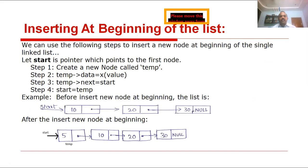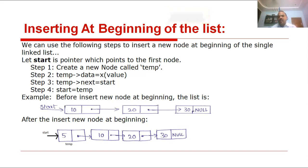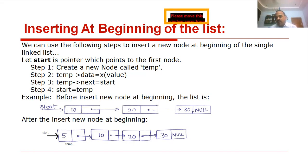All the operations available in the single linked list are also available in the circular single linked list. All the operations mean inserting, deleting, and traversing. Traversing means displaying. We can insert an element at the beginning of the list, end of the list, and middle of the list. Then deleting an element from the beginning, end, and middle of the list.